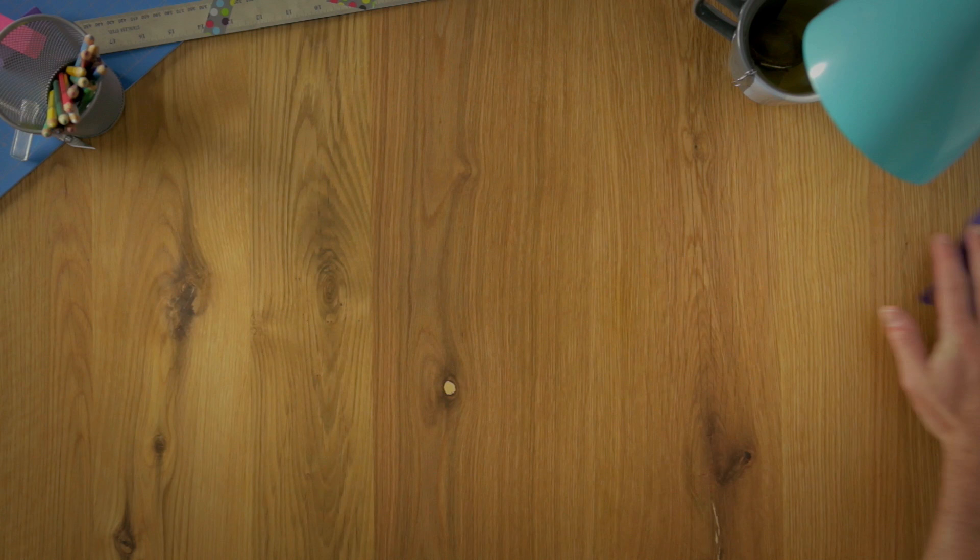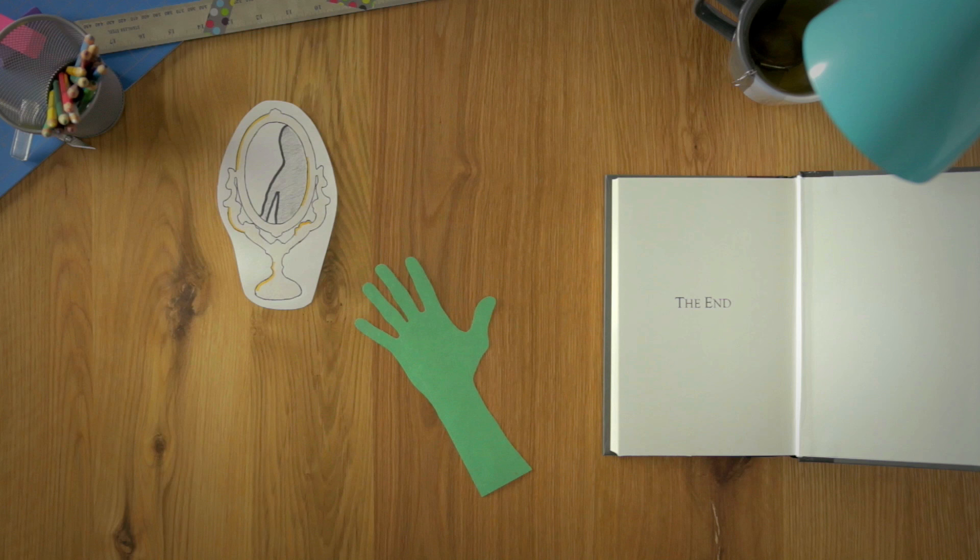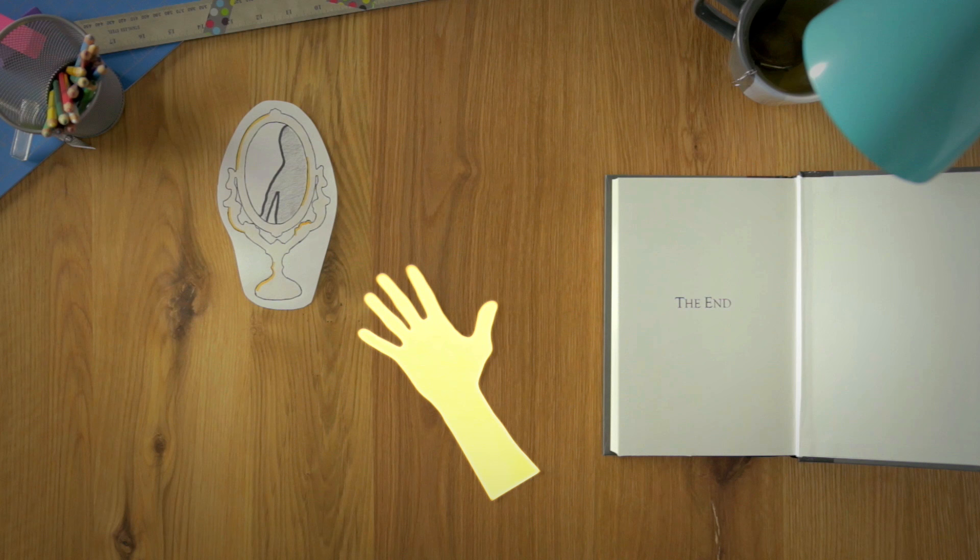After the events in Abhorsen, Lirael is now the Abhorsen-in-waiting. She is also a remembrancer, wielder of the Dark Mirror. Lirael lost one of her hands in the Binding of Orannis, but now she has a new hand. One of gilded steel and Charter magic. They call her Goldenhand.